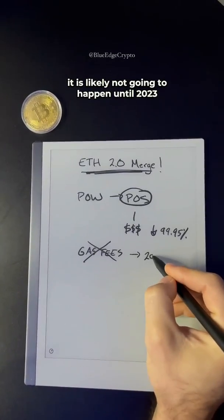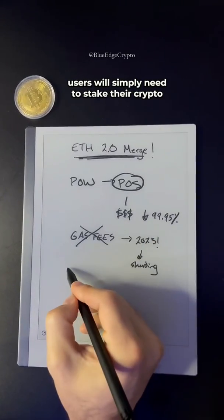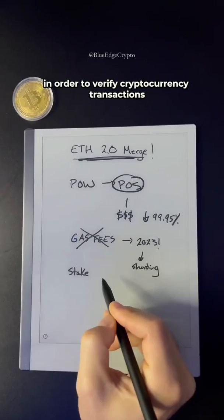It is likely not going to happen until 2023 when they come out with a technology called sharding. When they switch to proof of stake, users will simply need to stake their crypto in order to verify cryptocurrency transactions on Ethereum.